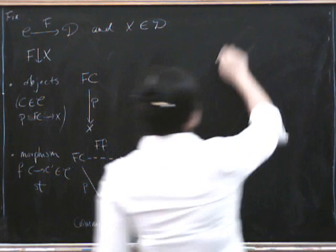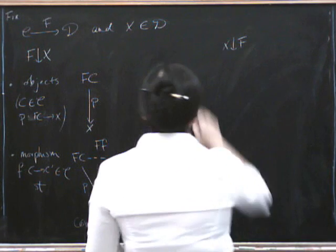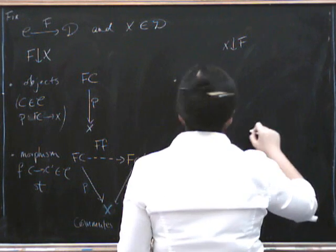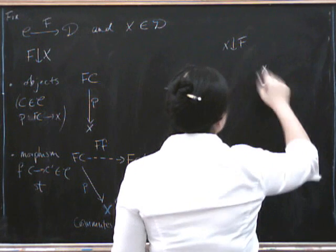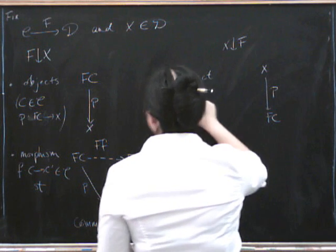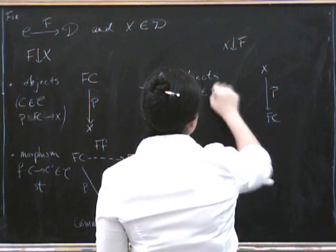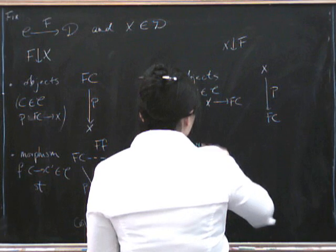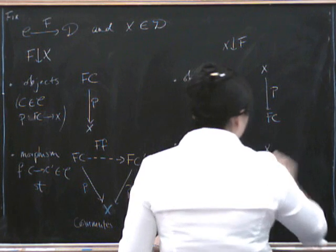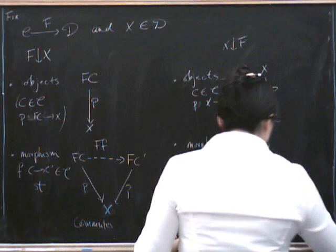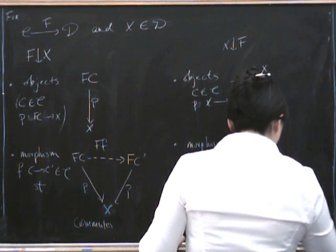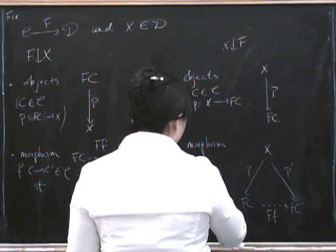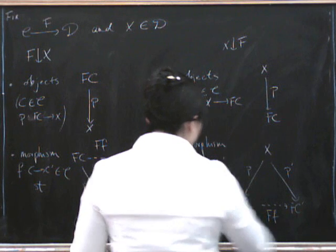And the dual case for this is that we can take X going down to F and what that has is objects the other way up. You can all do this. So X is up there and we have F of C at the bottom. So now the objects are a C in C and a morphism P from X to F of C. And of course, a morphism in this category is going to be something that makes the triangle the other way up commute. Here's P, here's P prime, and here's F of F. So it's going to be a morphism F from C to C prime such that this triangle commutes.